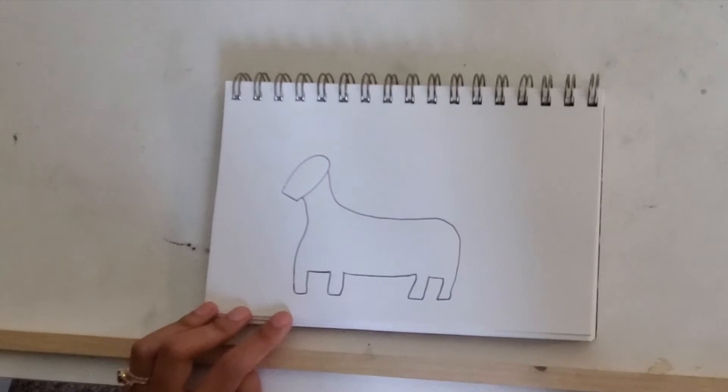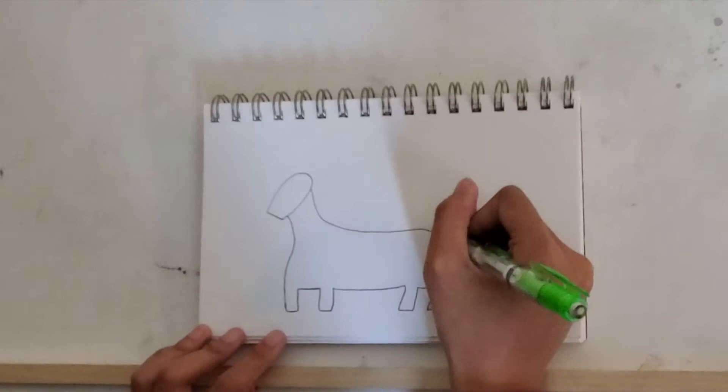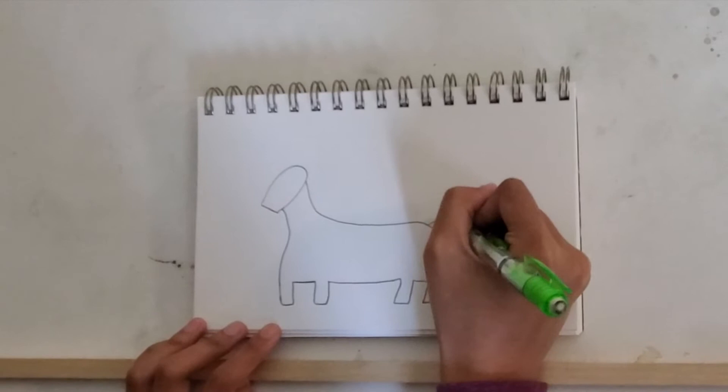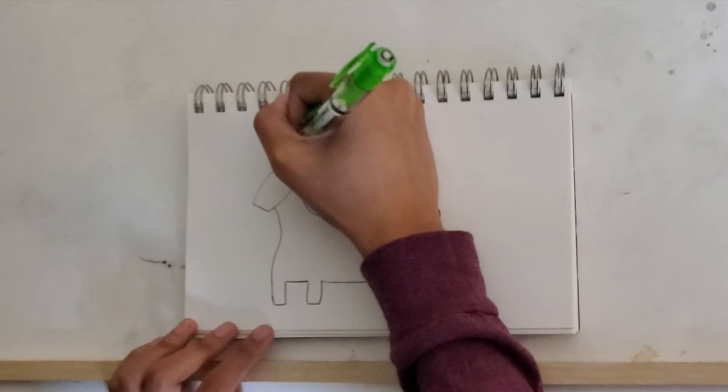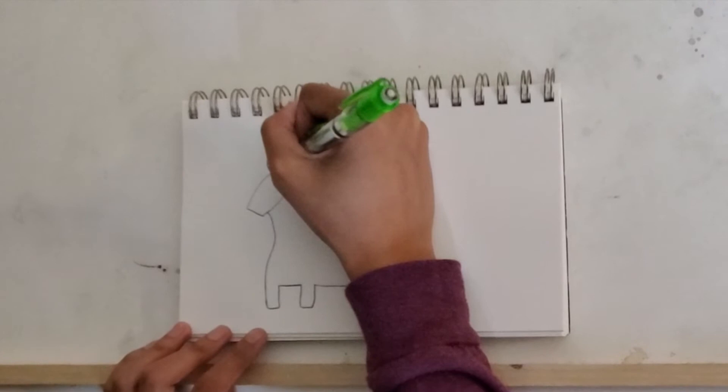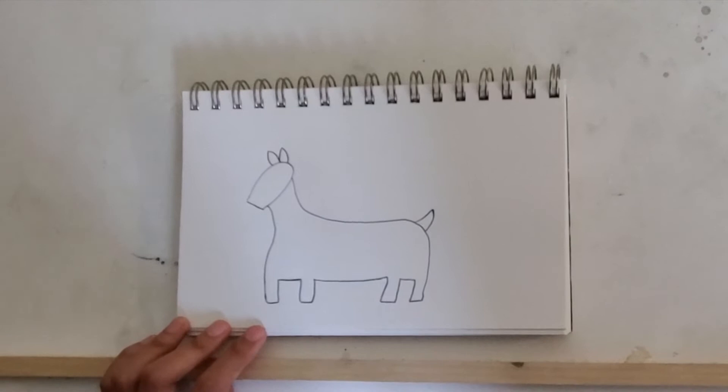We can go back and add some more detail. So let's go ahead and add a tail right here. Just a curved line like that. And we can go back and add the ears. Think about the shape of maybe a football or a lemon when you're drawing the shape of the ears. Or maybe like a flower petal. So I drew two ears. One, two.